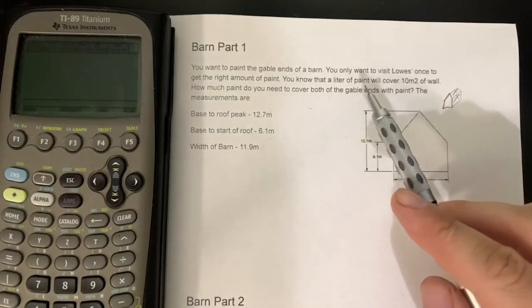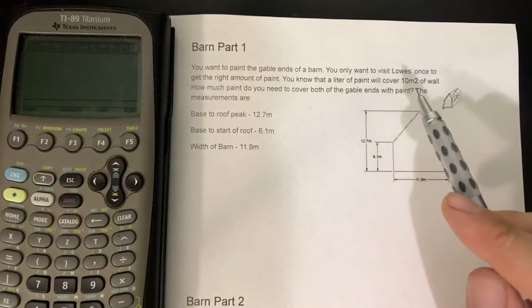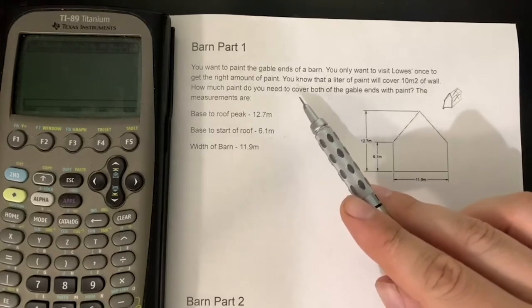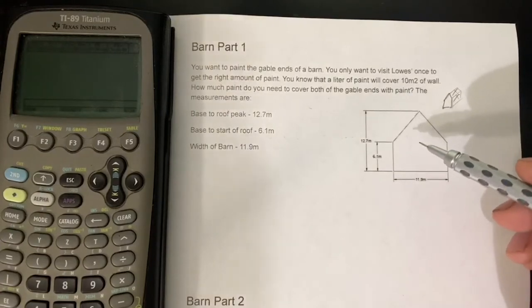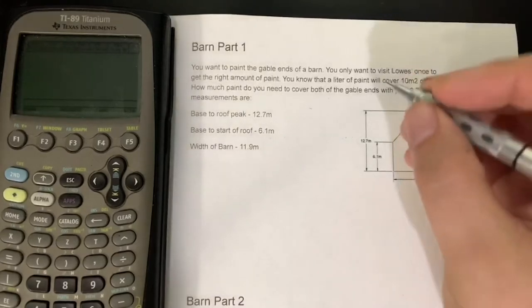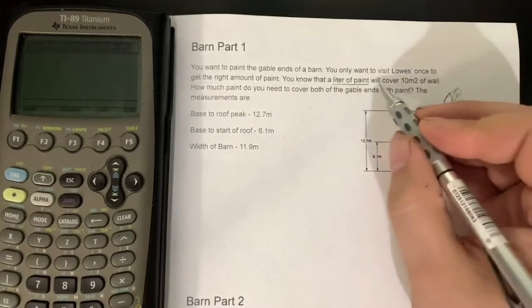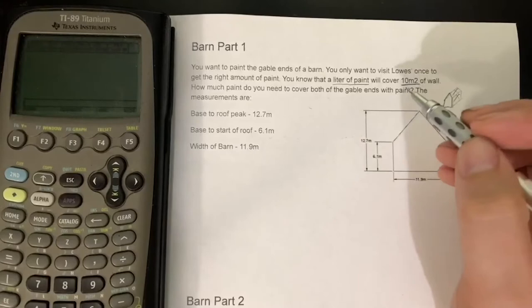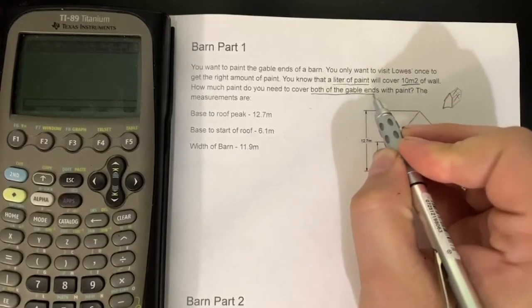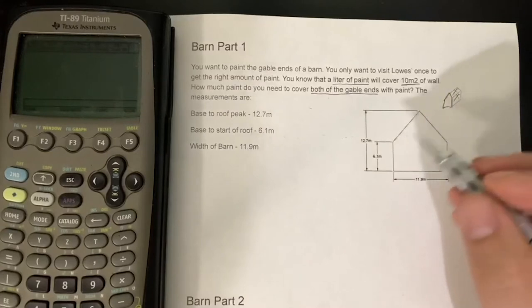Before we go into the short, we already did a little bit of research. We know that a liter of paint will cover 10 square meters of a wall. So how much paint do we need to cover both of the gable ends with paint? And then we've got the measurements that go ahead and tie into it. Some of the big ideas here: liters of paint, we know that one liter will cover 10 square meters, and we know that we have two gable ends to take care of. So at this point we need to start picking apart what are the dimensions of the barn.